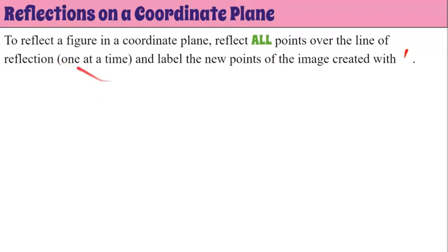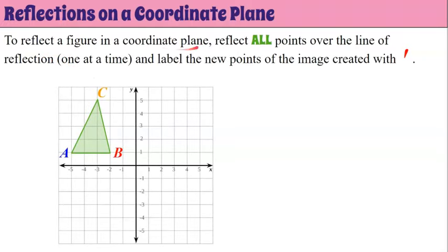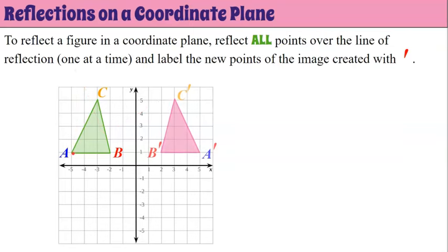Now let's talk about reflections in a coordinate plane. To reflect a figure in a coordinate plane, reflect all points over the line of reflection one at a time — that's the best advice I can give you. Label the new points of the image with an apostrophe, or prime. Here's what it looks like: this is the image reflected over the y-axis.